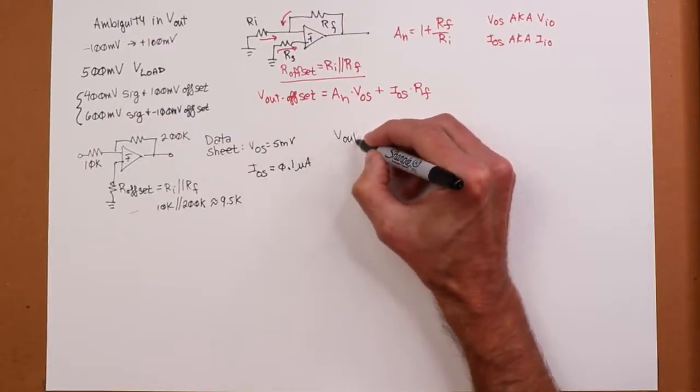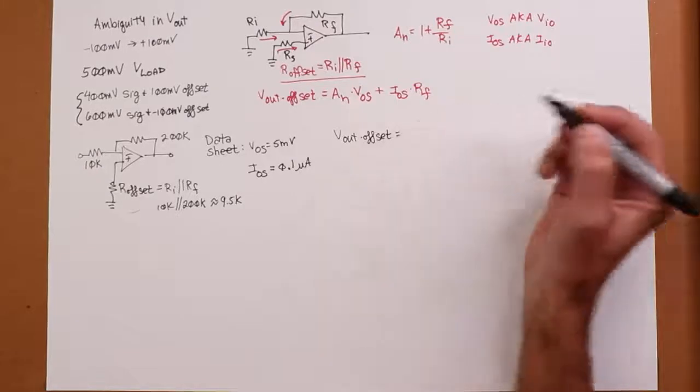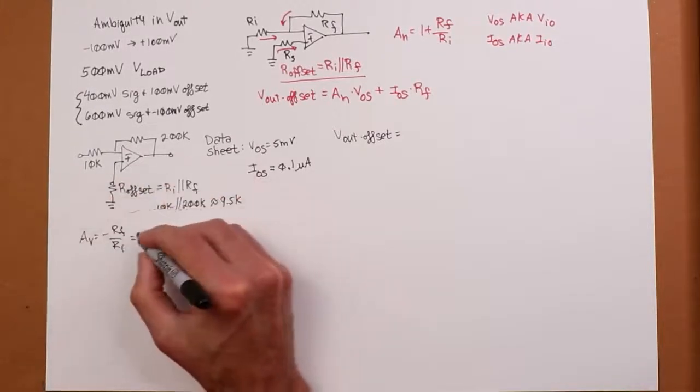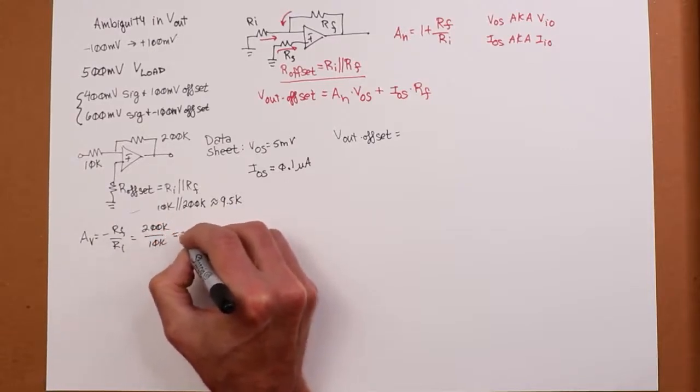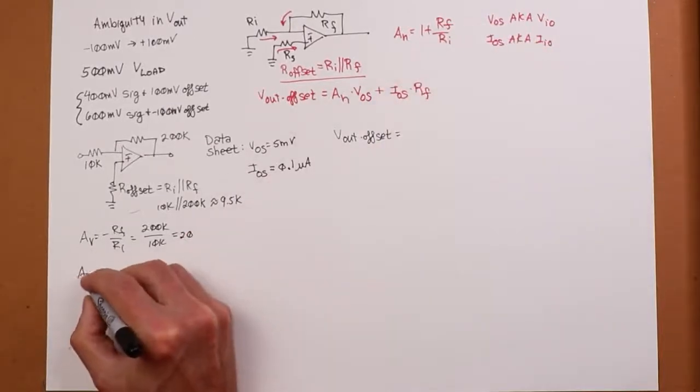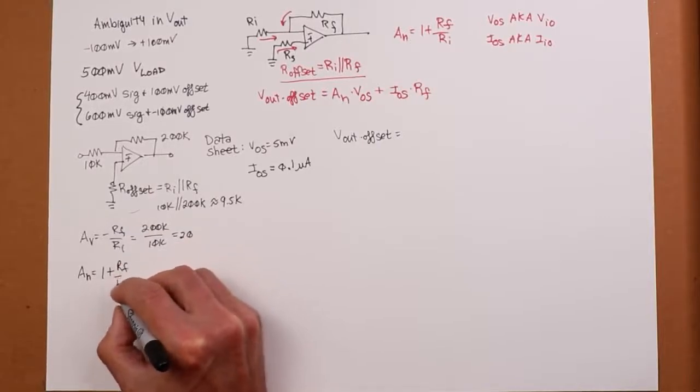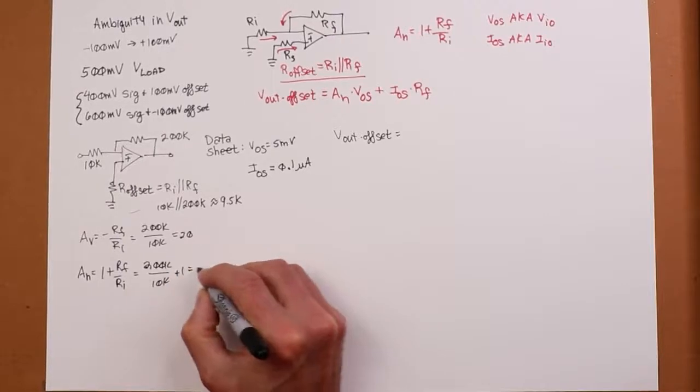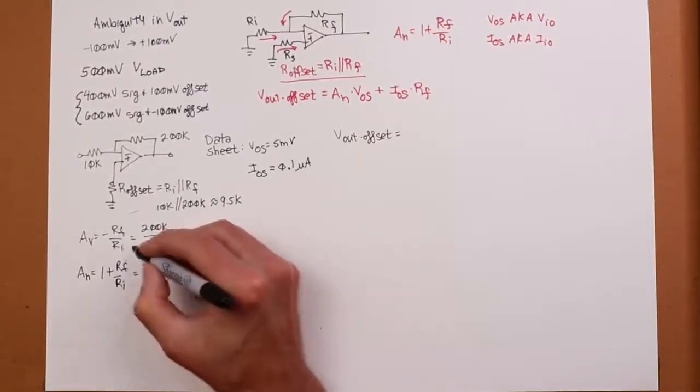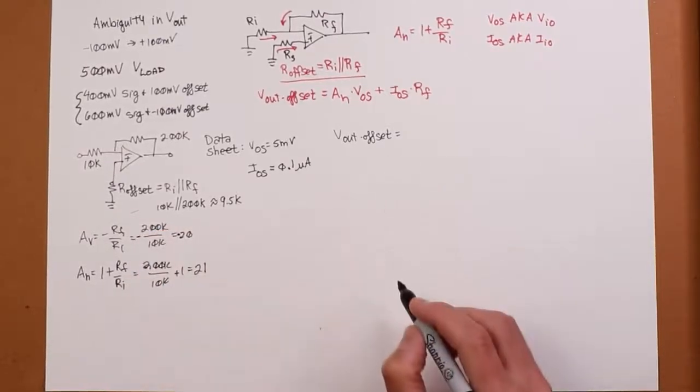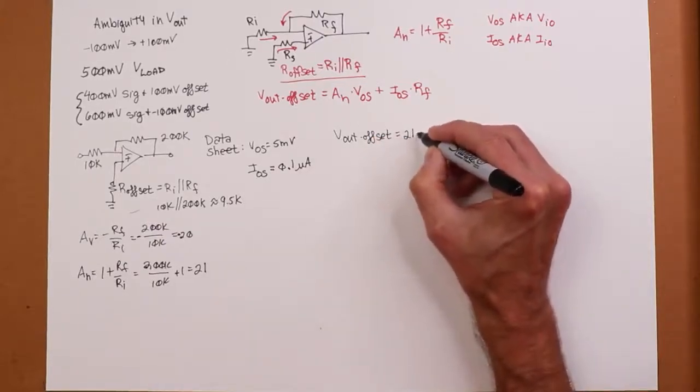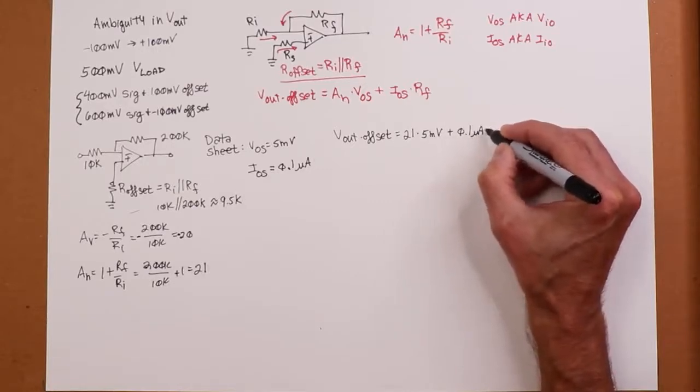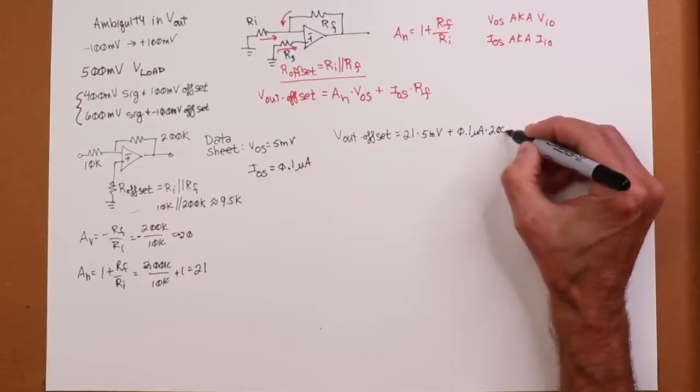Let's say I look up on my data sheet for this particular device, and the data sheet tells me that VOS is 5 millivolts, and that's a worst case thing, and IOS is 0.1 microamps, 100 nanoamps, however you want to say that. So, my questions are, what's the value of R offset to minimize this offset? And secondly, how big is the offset? How bad is the offset? So, the first part is fairly easily completed. That's just the RI in parallel with the RF. 10k in parallel with 200k. So, that's about 9.5k. The Vout offset, we'll just use this equation. What's my noise gain? Well, signal gain is a negative RF over RI. We're going to use this later. That's 200k over 10k, or negative 20.